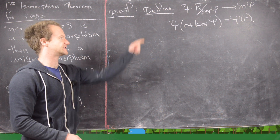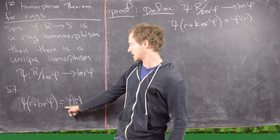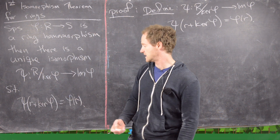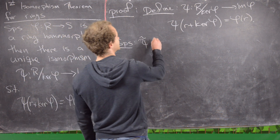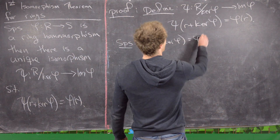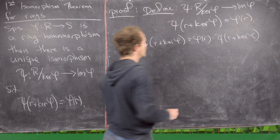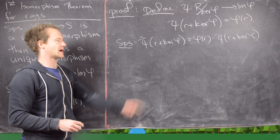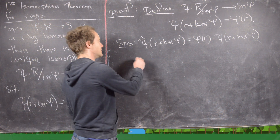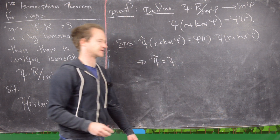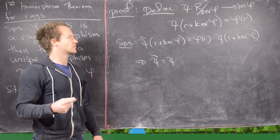To finish, we're going to show that this psi as defined is unique. The defining property of psi — the uniqueness — is predicated on the fact that it takes the coset R plus kernel of phi to phi of R. So suppose psi-tilde also takes R plus kernel of phi up to phi of R. Since every element of this quotient ring can be written in this form, we know that psi-tilde and psi agree at every element of their domain. But agreeing at every element of their domain means they are the same as functions. So psi-tilde equals psi, which proves the uniqueness property.